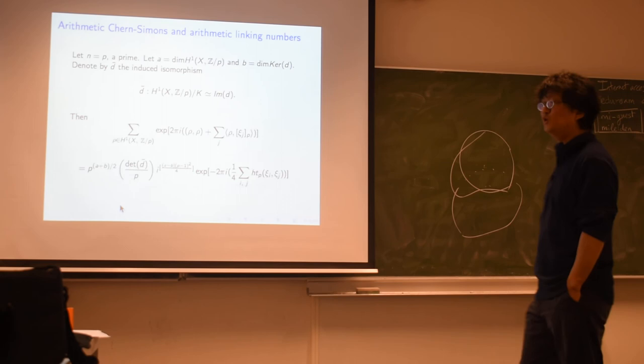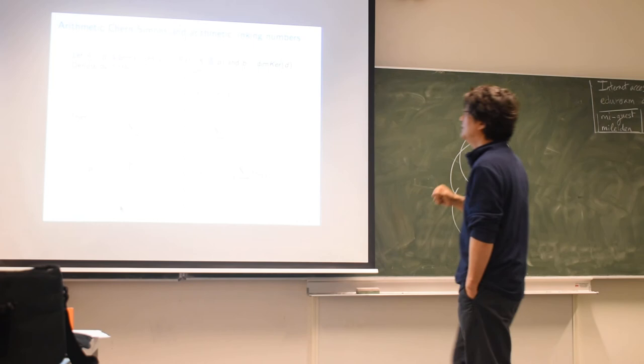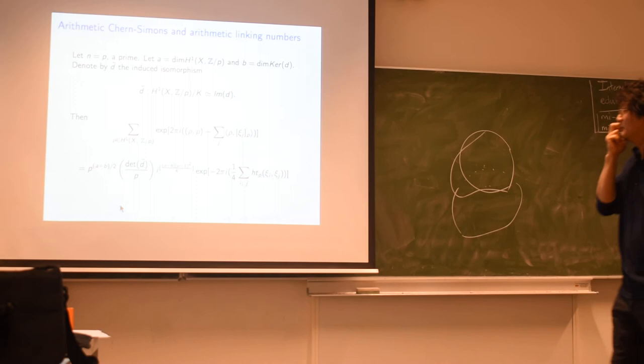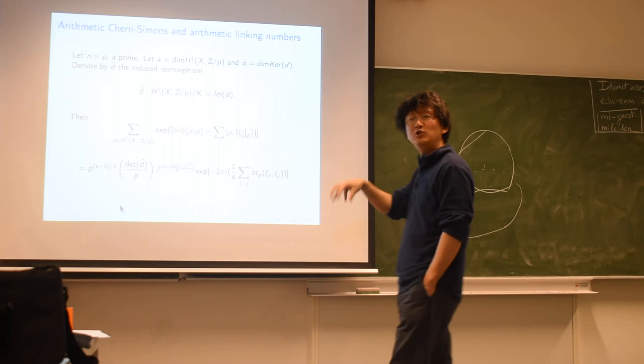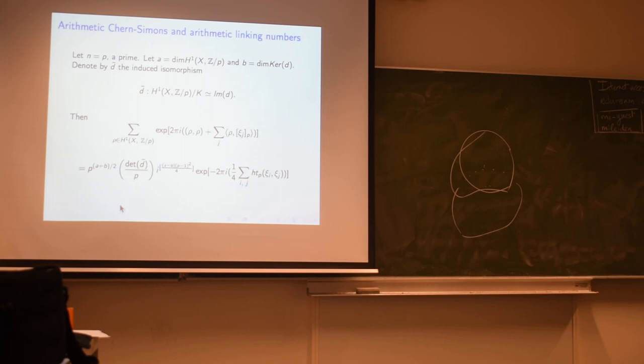One needs to generalize this, but among the open questions I think one needs to face is: how do you take a limit over n? These are all like mod-n differential forms, and how to take a limit over n is not obvious at all, because of the way the Bockstein maps behave.